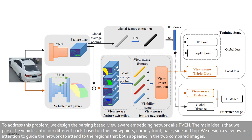To address this problem, we design a Passing-Based Wheel-Wire Embedding Network, a.k.a. P1. The main idea is that we pass the vehicles into four different paths based on their viewpoints, namely front, back, side, and top. We also design a wheel-wire attention to guide the network to attend to the regions that are present in both of the two compared images.